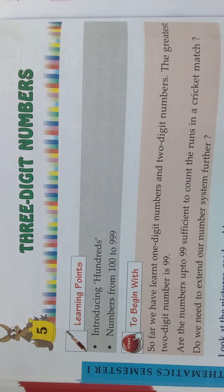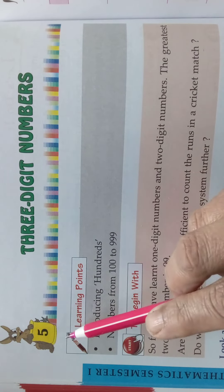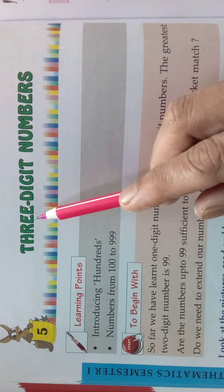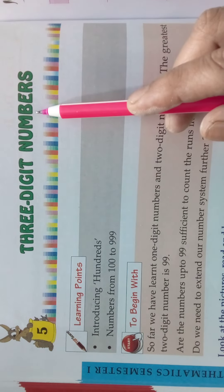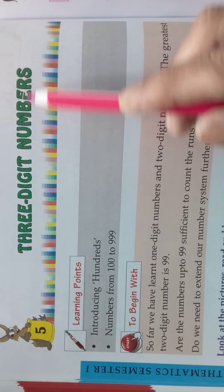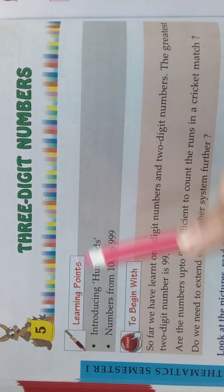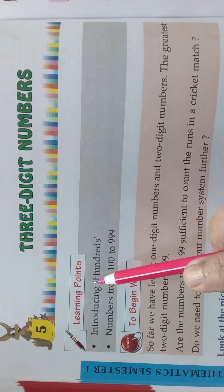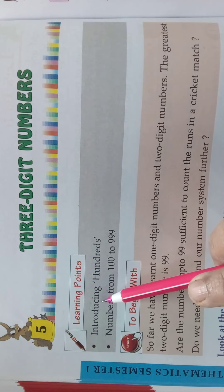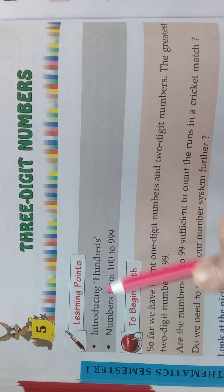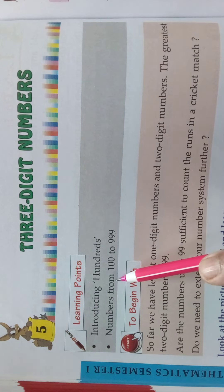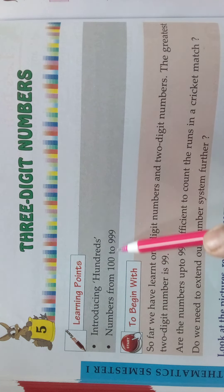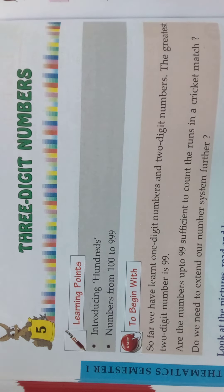Hi children, welcome to V.A.N. School. I am Maitly here. Now we are going to learn the 5th chapter: 3 digit numbers. In this we are going to learn about introducing hundreds. Numbers from 100 to 999.